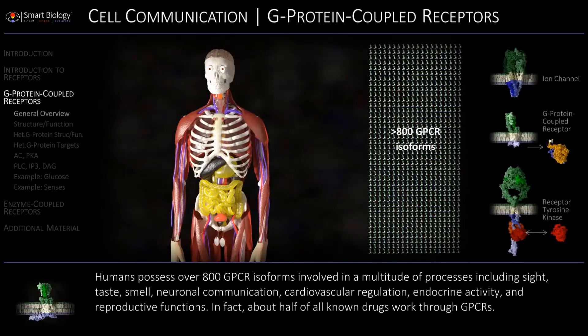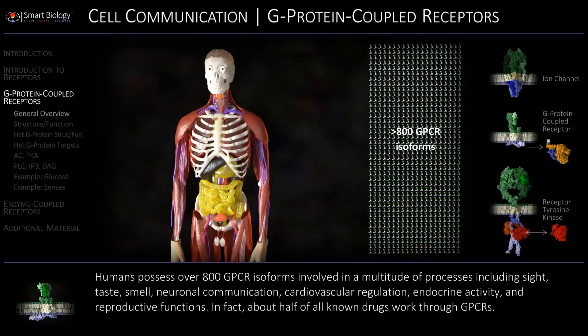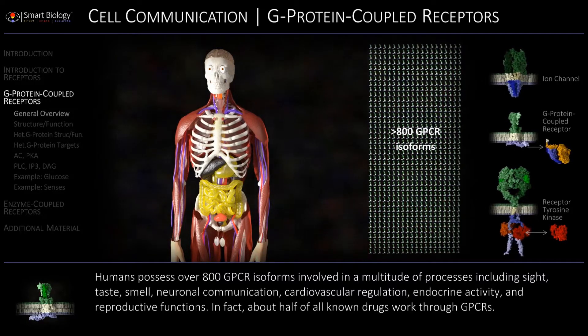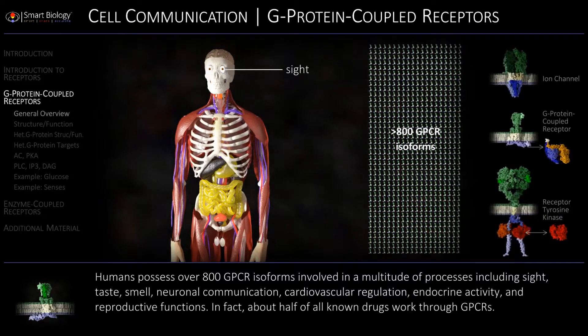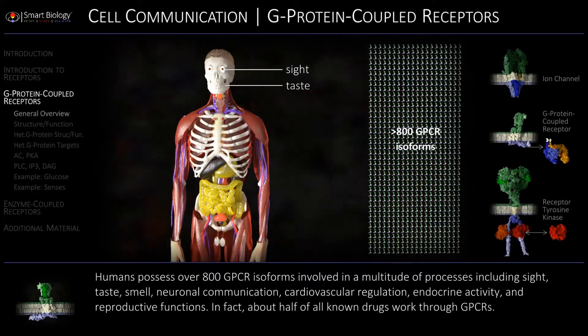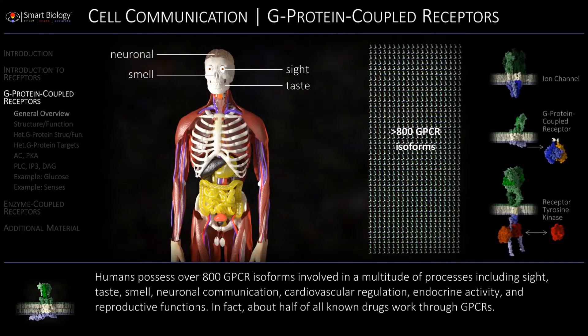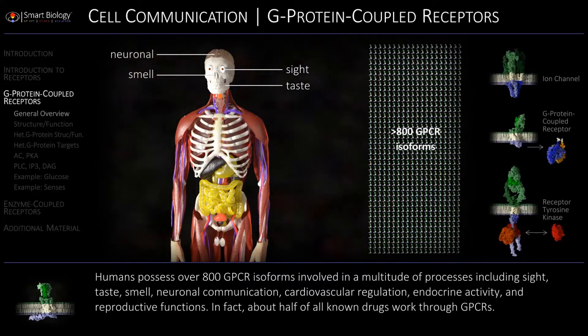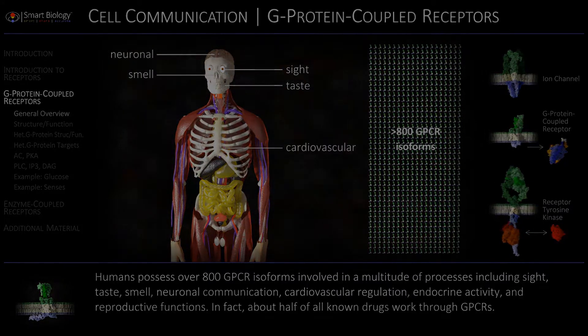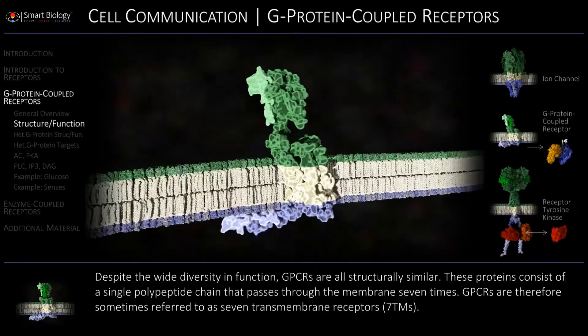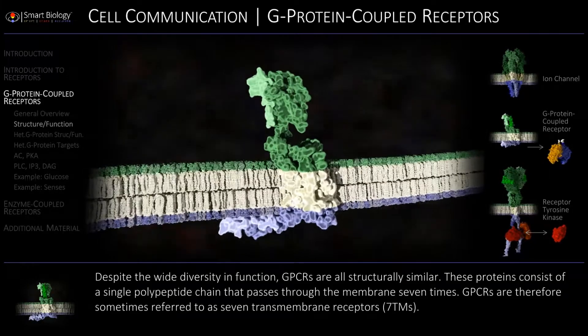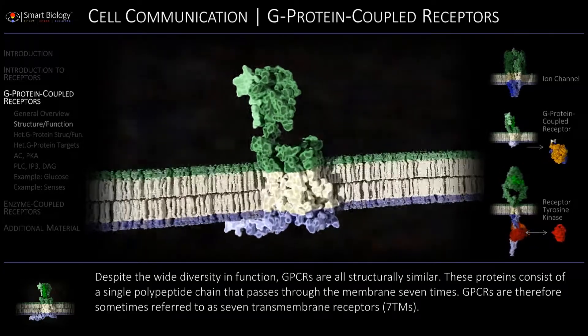GPCRs are involved in a multitude of processes including sight, taste, smell, neuronal communication, and cardiovascular regulation. Despite the wide diversity in function,